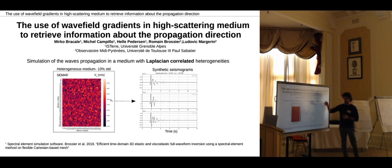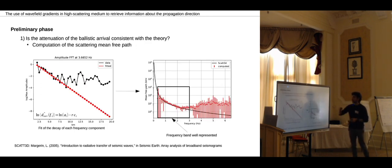At the moment I built some simulations. I built an heterogeneous medium in which I consider the heterogeneities Laplacian correlated. In this case I show an example in which the fluctuation is 10% of the standard deviation. So far I concluded just a preliminary analysis which came just to understand if our simulations were well representing the behavior of seismic waves in a high scattering medium.